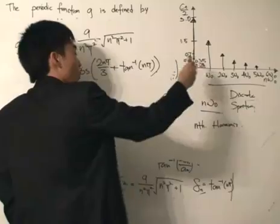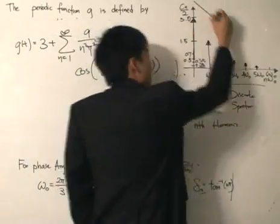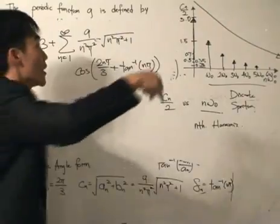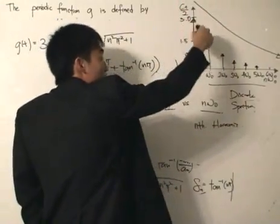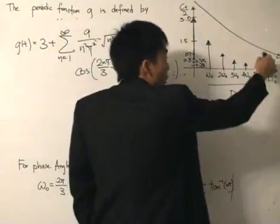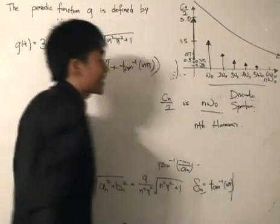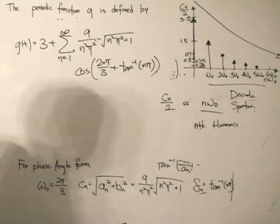As you can see from this graph, the drop in cₙ/2 is quite dramatic. It falls about by half and then gets halved again and goes all the way to zero as you reach the sixth harmonic.